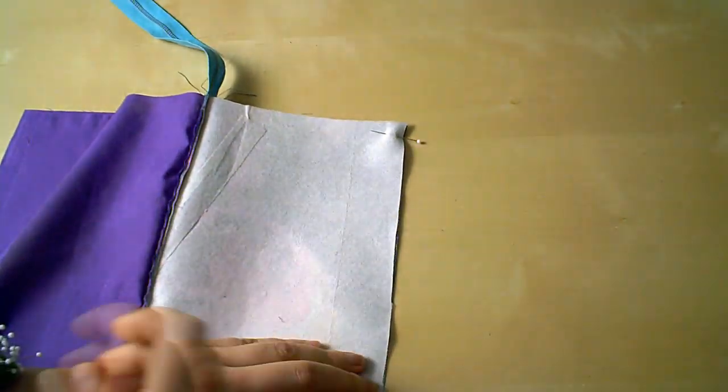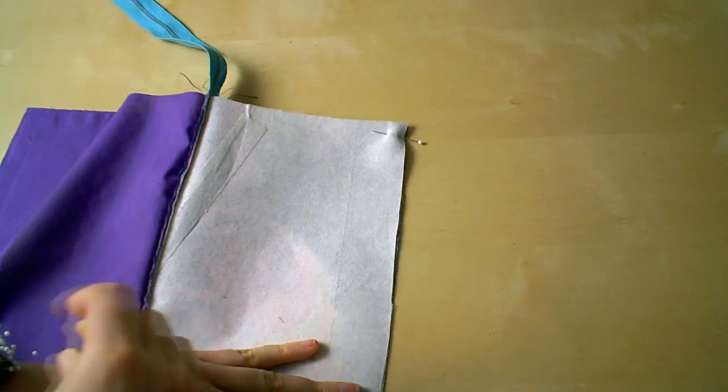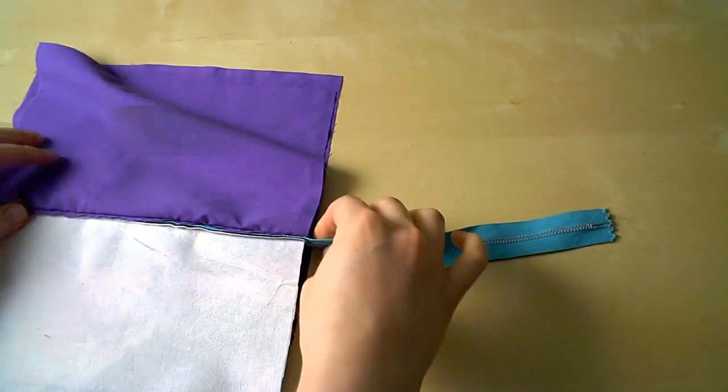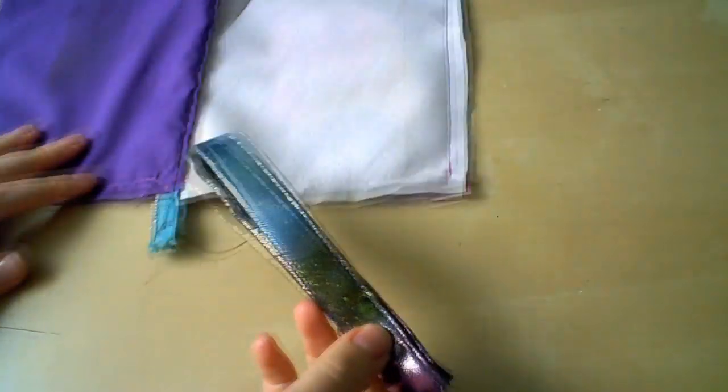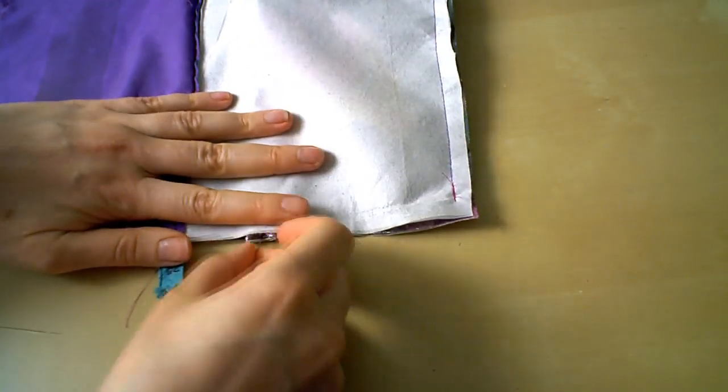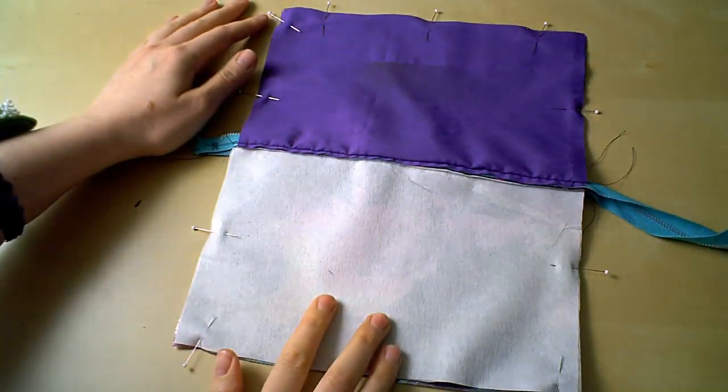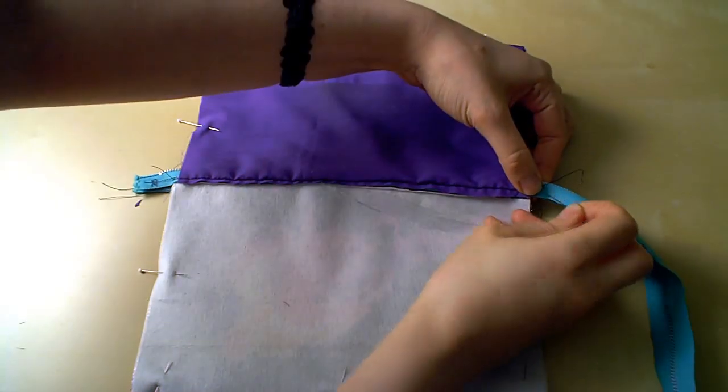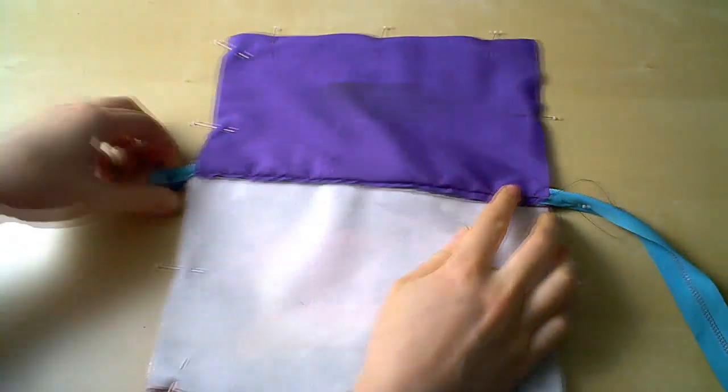Now you want to pull the two outer fabric pieces together. Line them up right sides together and pin. Then you'll repeat the same thing with the lining pieces. And I almost forgot to pin my strap in. You want to keep it about 1.5 inches away from the zipper. Once you have everything pinned together, you want to pay special attention to the zipper. It should be folded in half with the fold towards the lining.